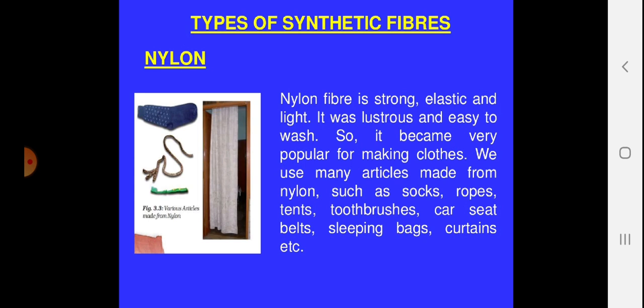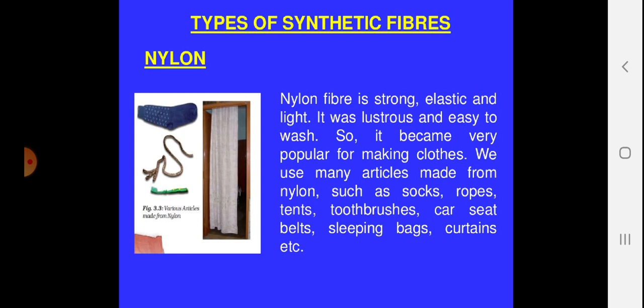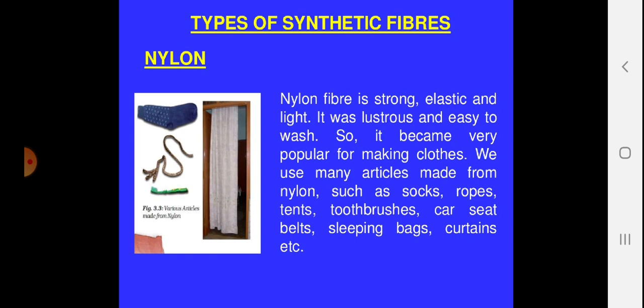Now let us discuss the basic properties of nylon. Nylon fiber is strong, elastic, and light. It is lustrous and easy to wash. Lustrous means it has luster — the texture is not rough but quite smooth — so it is easy to wash.